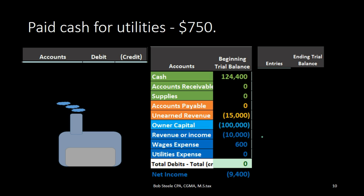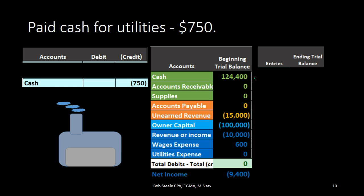First question: is cash affected? If we're paying the utility bill, we are paying it with cash, so cash is impacted. Cash has a debit balance, represented by the fact that it does not have brackets around it on our trial balance. We need to make it go down, so we do the opposite — we're going to credit it in order to make it go down.